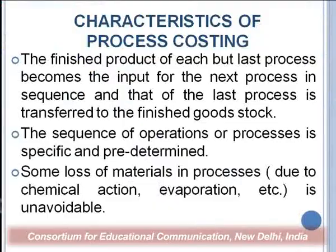The finished product of each process — except the last — becomes the input of the next process in the sequence. The output of the last process is transferred to the finished stock. If there are four processes, the output of process 1 becomes the input of process 2, the output of process 2 becomes the input of process 3, and so on. Since process 4 is the last stage, whatever is produced there becomes the finished goods. The sequence of operations is specified and predetermined.